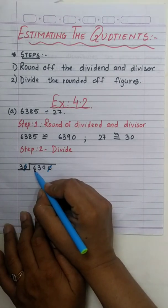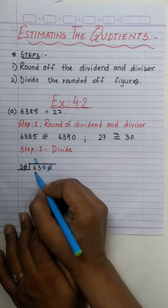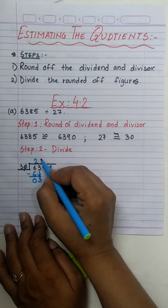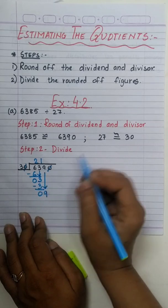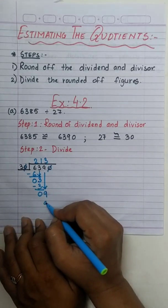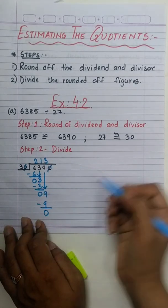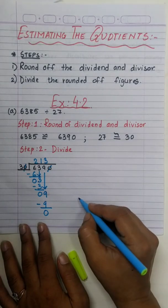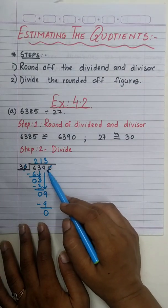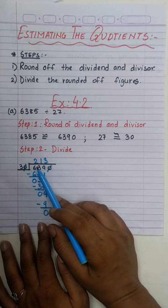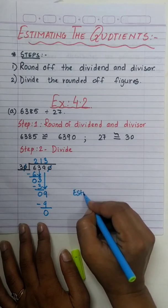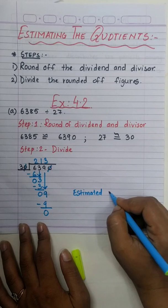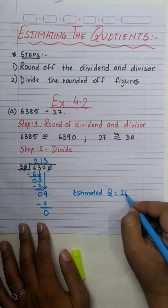We will divide the first digit. 3 twos are 6. Subtract, remainder 0. Bring 3 down. 3 ones are 3. Subtract, remainder 0. Bring 9 down. 3 threes are 9. Subtract, remainder is 0. So when we divide 6,390 by 30, our estimated quotient will be 230.